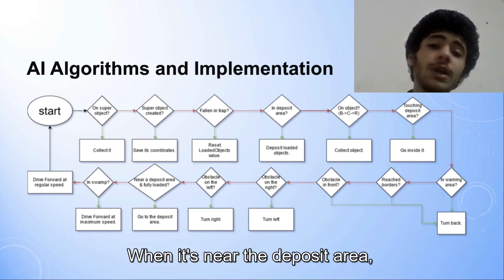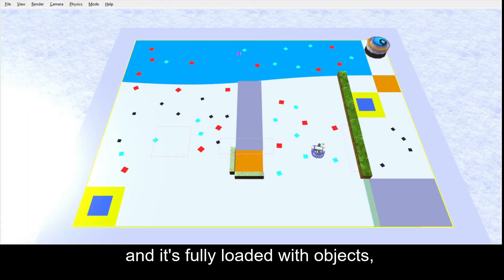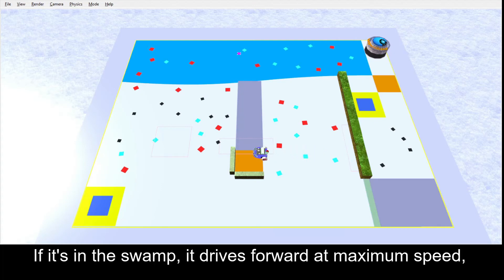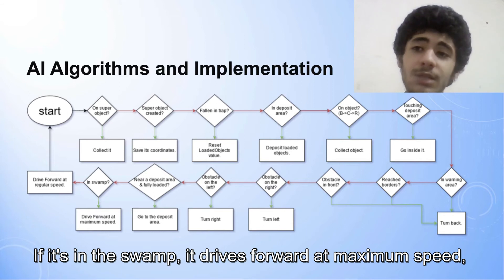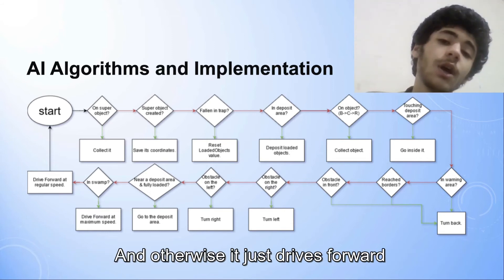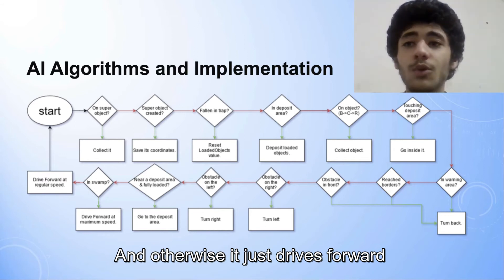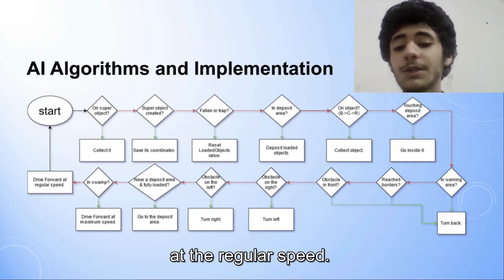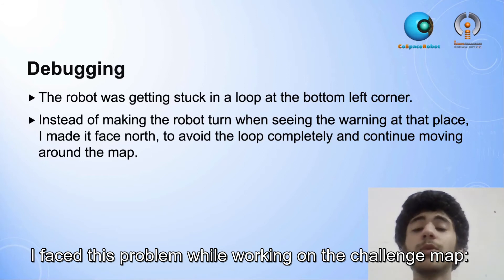When it's near a deposit area and it's fully loaded with objects, it goes to the deposit area. If it's in swamp, it drives forward at maximum speed to get out of the swamp, and otherwise it just drives forward at the regular speed.